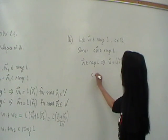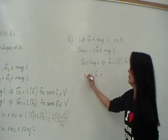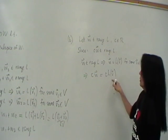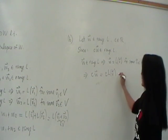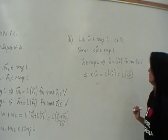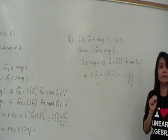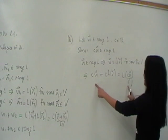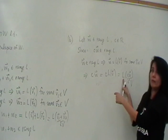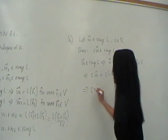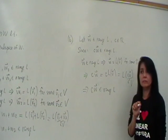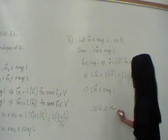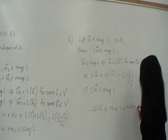If W is in the range of L, that means we can write W as L of V for some V in V. Maybe we could have combined this to save us some time. So now if you want CW, what does CW look like? This will imply CW, because W is L of V, will look like C times L of V. But because L is a linear transformation, we can write this as L of C times V. But where is CV? CV is an element of V. And so therefore, that means to say that CW, because we were able to find an element of V such that the image of that element of V under L is CW, that means CW is in the range of L.